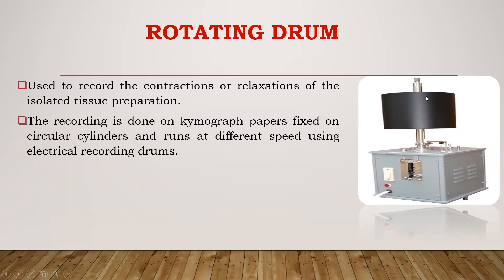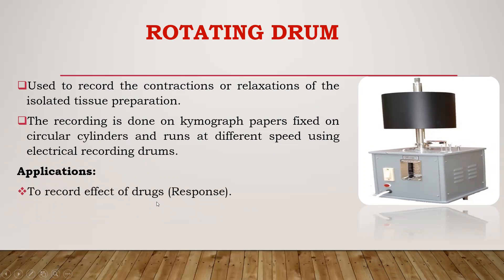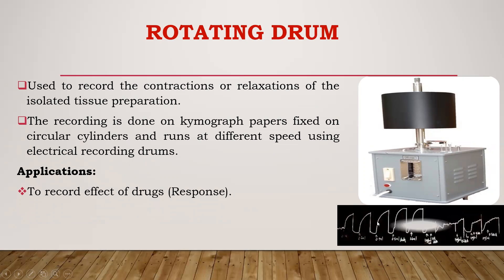The recording is done on chymograph paper. Previously it was smoked paper, but nowadays a white chymograph paper is fixed on this recording drum or circular cylinder. The drum is rotated at different speeds, and the speed adjustment is provided on the instrument. This is used to record the effect of drug responses, showing such types of graphs on the chymogram paper after recording.